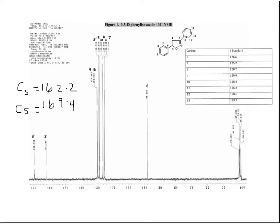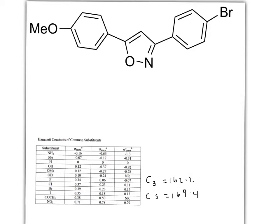I also have the shifts for C3 and C5 which is listed here at 162.2 and 169.4. So if you want to calculate the carbon-13 shifts for this particular compound,